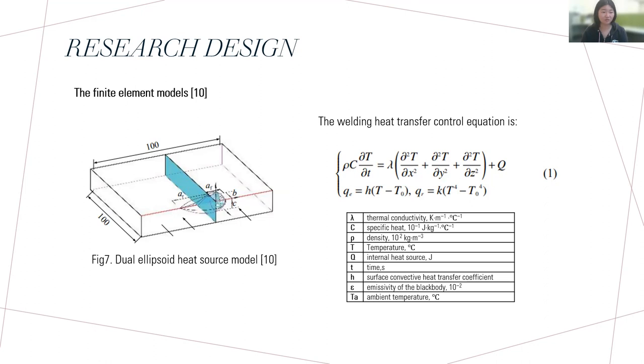Figure seven is a dual heat source model, and the equation is the welding heat transfer control equation.